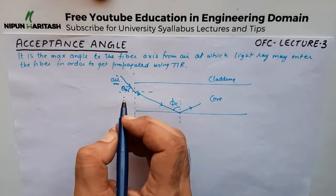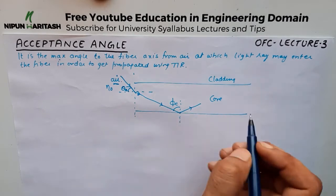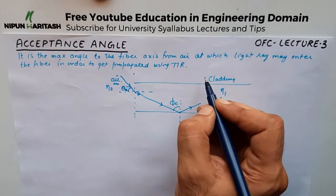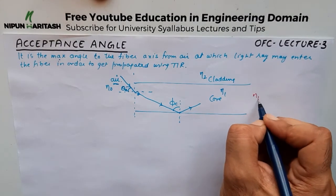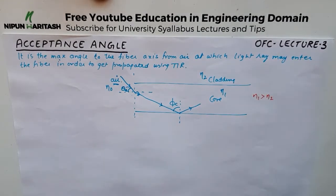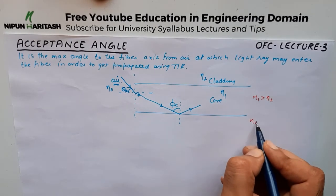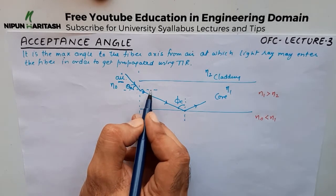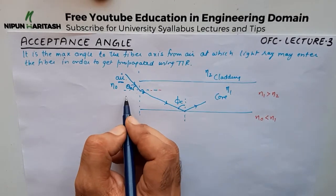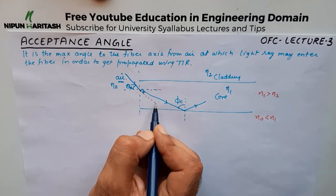The refractive index of air is eta naught, the refractive index of core is eta1, and that of cladding is eta2. We know the condition that eta1 is always greater than eta2 because we want the light to come back. The refractive index of air is less than that of the core.